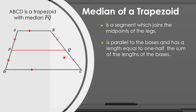Let us have this figure. We have P as the midpoint of side AB, so P divides AB into two congruent parts. Similarly, Q is the midpoint of side BC, which divides BC into two congruent parts as well. This line PQ is what we call the median of the trapezoid, and it is parallel to the bases AB and BC.